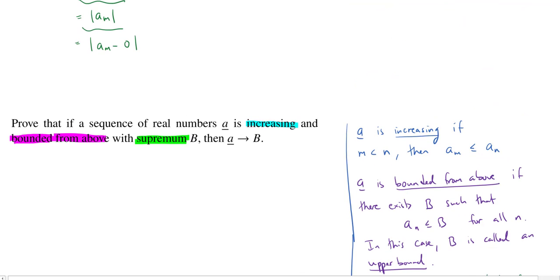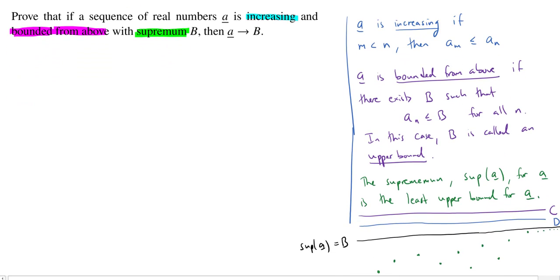So our claim here is that if you know the sequence is increasing and it is bounded from above, so it's bounded from above so we can ask what's the least upper bound, that's the supremum, then actually the sequence A will converge to that supremum. So let's try to write down what this supremum condition is going to mean, that we have a least upper bound.